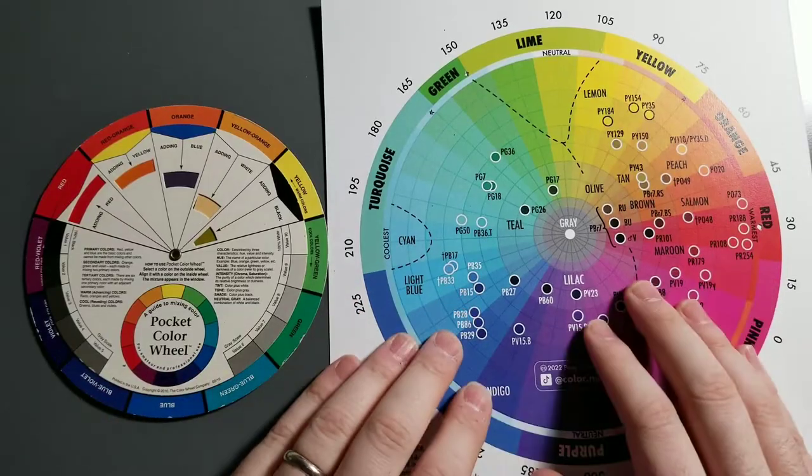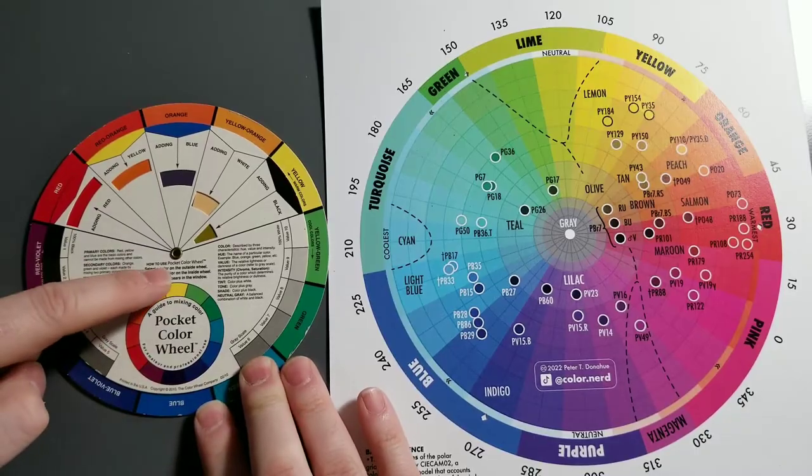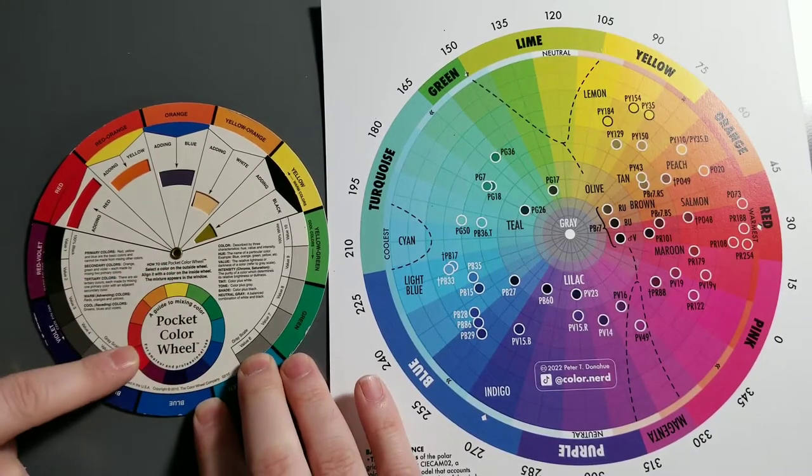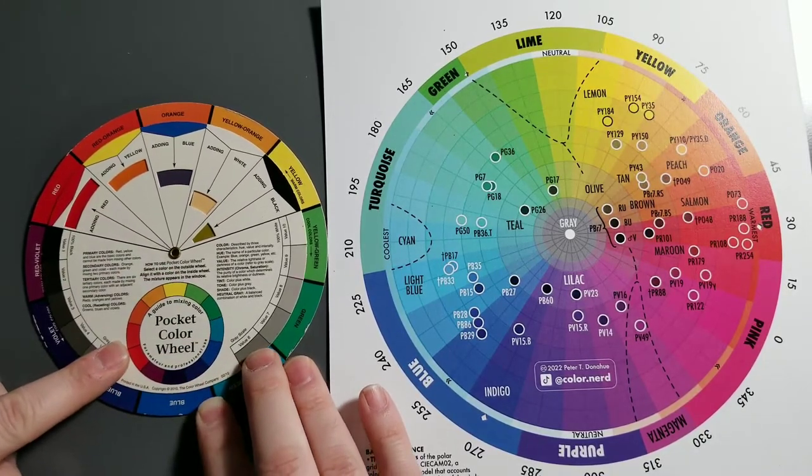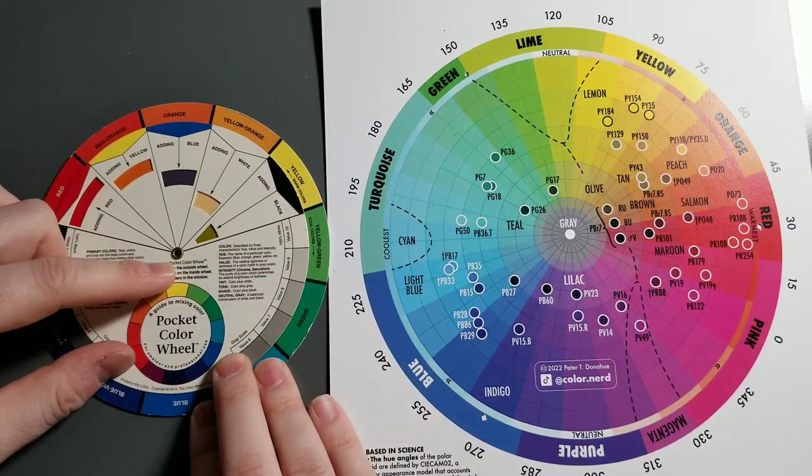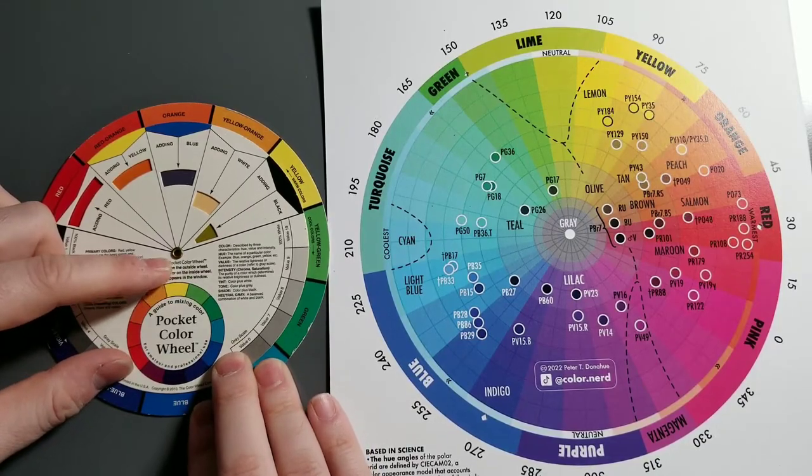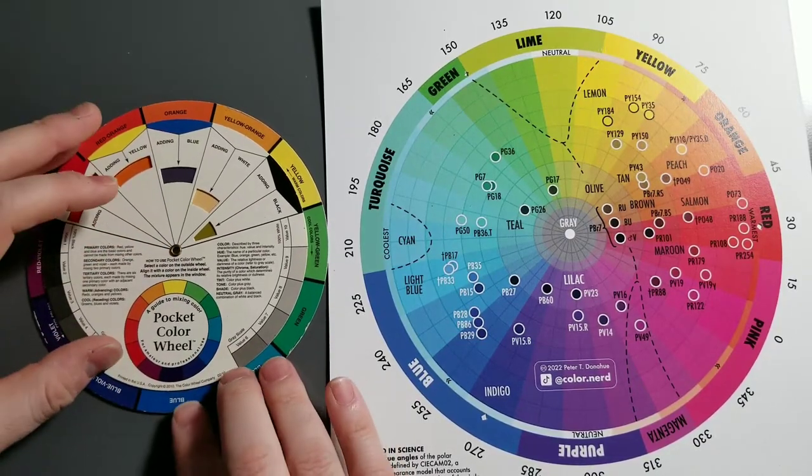Number one difference between the color disc and the traditional artist color wheel is that the traditional color wheel is arranged around red, yellow, and blue as the primary colors. That theory, the red, yellow, blue primary color theory, was kind of disproven 160 or 70 years ago. But artists still cling to it for a number of reasons.